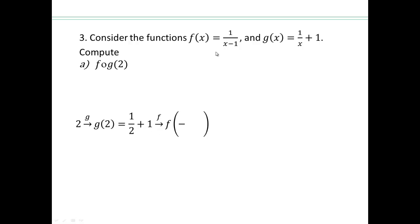Then you're putting this whole thing into the f function. So 1 half plus 1 is going to go into the x. So it would be 1 over that, minus 1. When you simplify that, this plus 1 got undone with the negative 1, and 1 over 1 half is going to give you 2. We started with 2 and ended with 2.